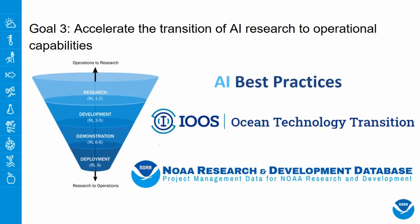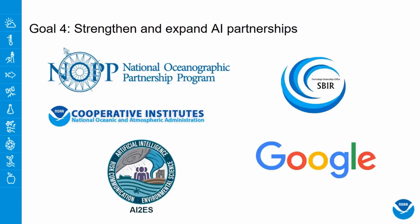Goal three is basically to transition those R&D projects into operational capabilities. You can see on the left side we use a readiness level to move from operations to research and from research to operations. Goal four is to strengthen and expand AI partnerships. As mentioned, partnership and collaboration between different partners is a key to advancing AI.